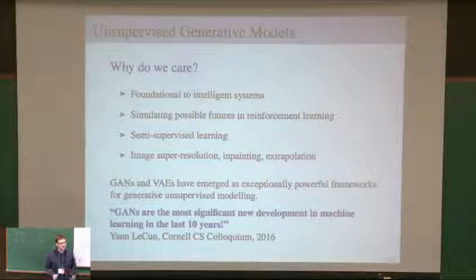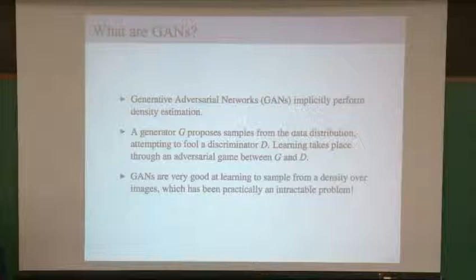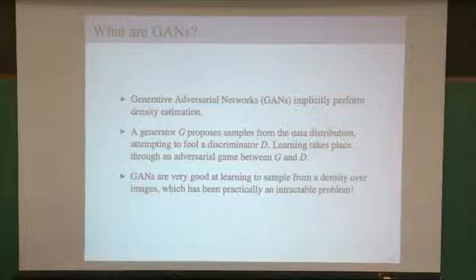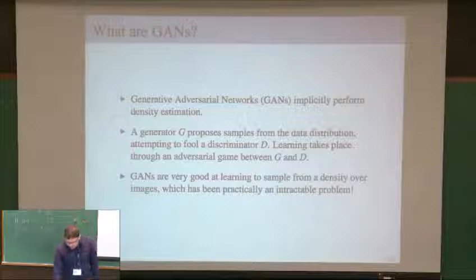So what are GANs? At a high level, GANs implicitly perform density estimation. A generator G will propose samples from a data distribution, attempting to fool what's called a discriminator D, and learning takes place through an adversarial game between the generator G and the discriminator D. GANs are particularly good at learning to sample from distributions over images, which has been a challenging problem historically.